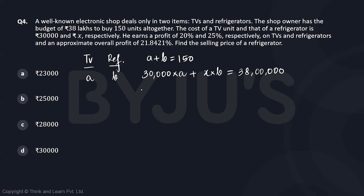The third equation is 20% profit on the first term. So 0.20 times 30,000A plus 25% profit on the second term, which is 0.25 times XB, equals 21.8421% of 38 lakhs.